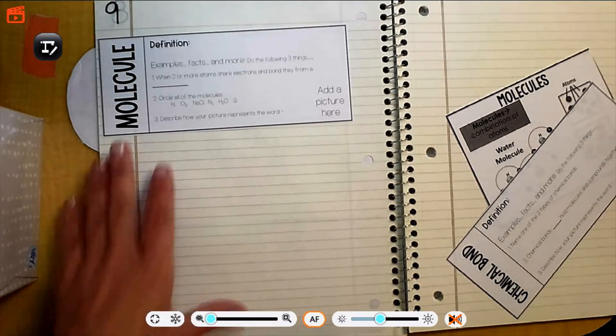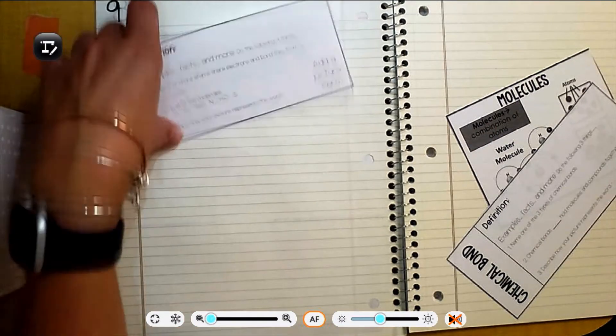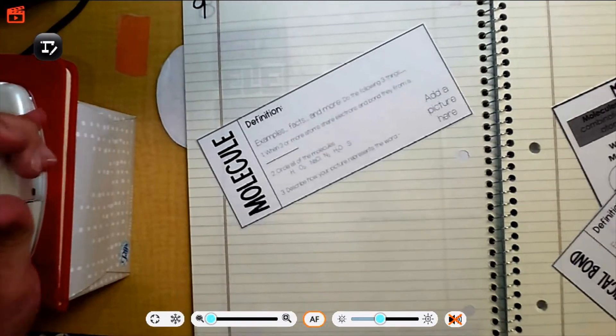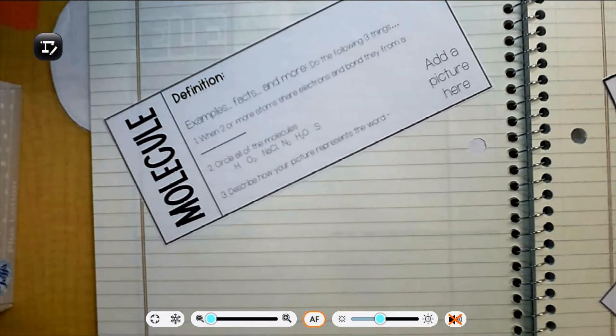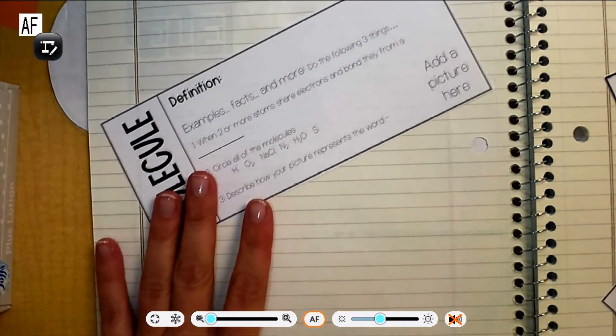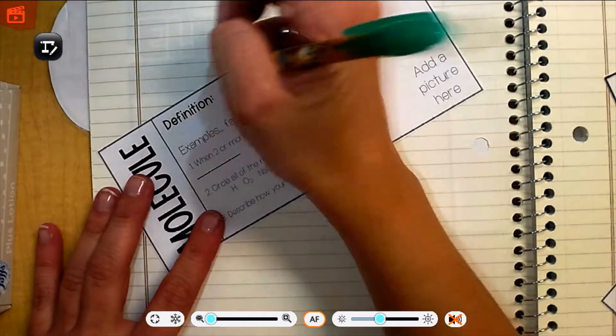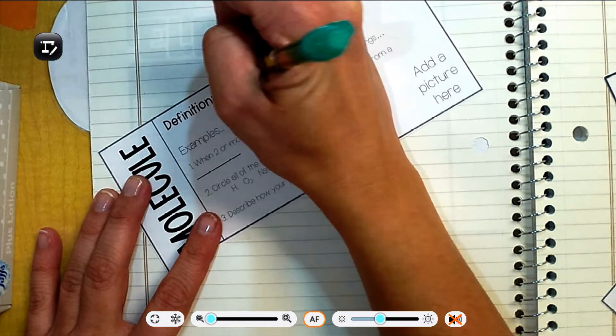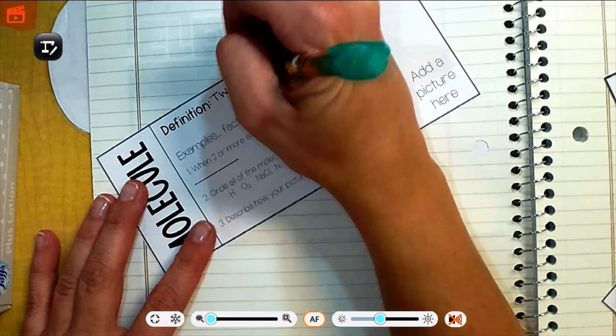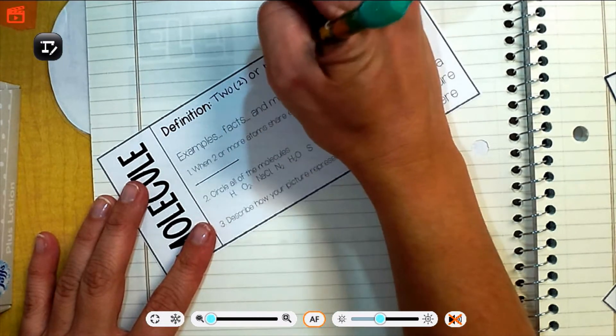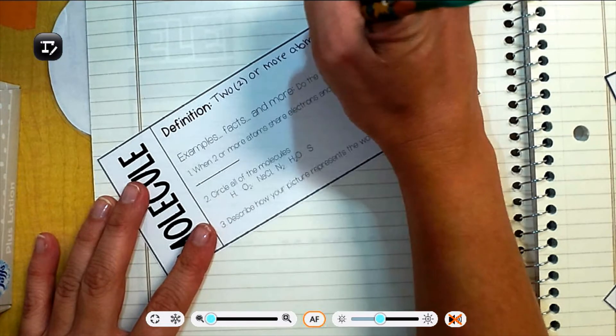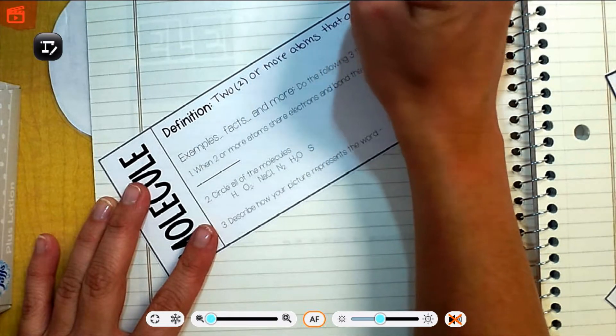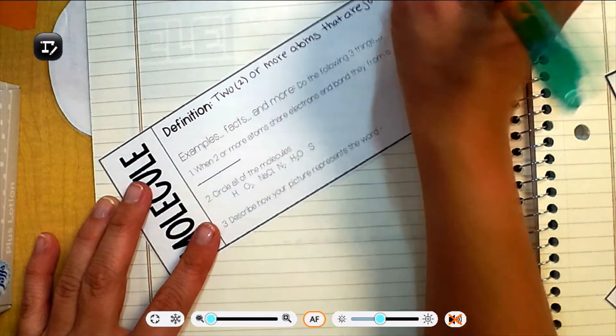Okay, so our first word is molecule. If you've already looked in my dictionary, Ms. Philpott's super amazing, one-of-a-kind science dictionary, then you already know the definition. Okay, my definition is two. So it's a long one, so don't write too big. Two. It's like the number two. Two or more atoms that are joined together.